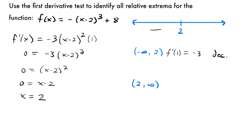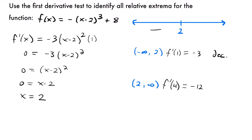Now let's pick a value between 2 and infinity — I'll pick 4. Plugging into our derivative: negative 3 times 4 minus 2 squared. Four minus 2 is 2, and 2 squared is 4. Then 4 times negative 3 is negative 12. Once again, that's a negative slope, so our function is decreasing on that interval as well.